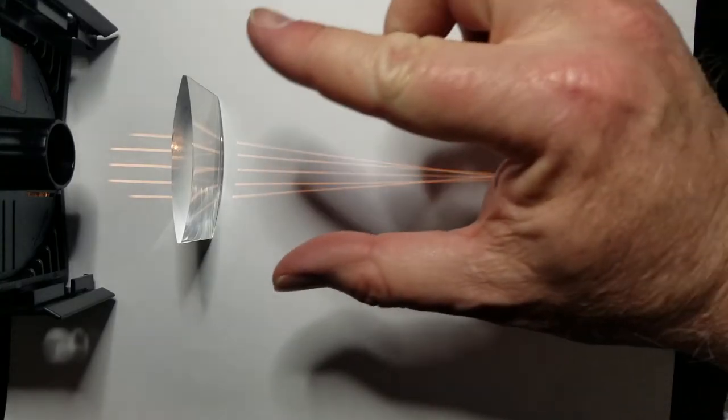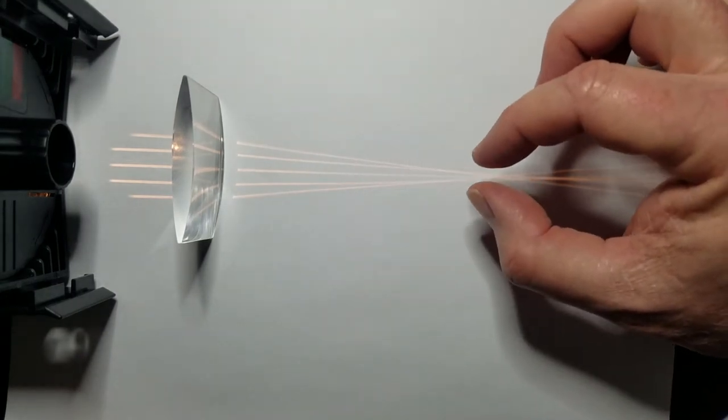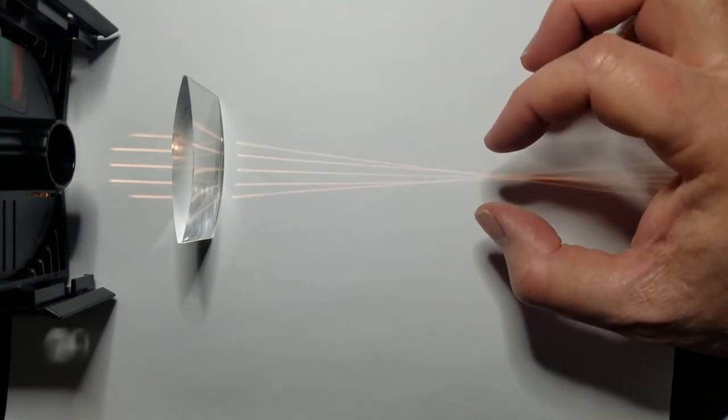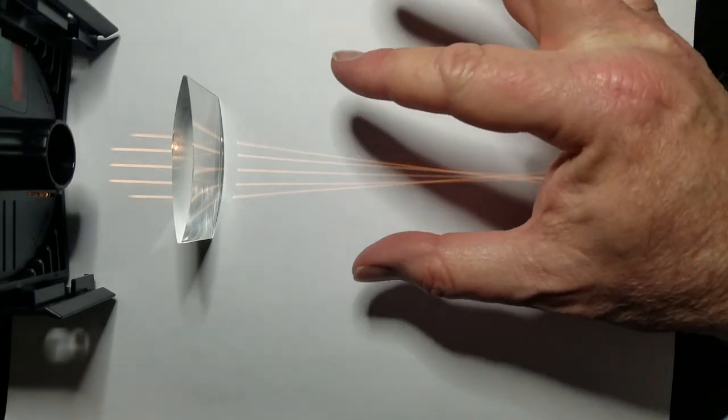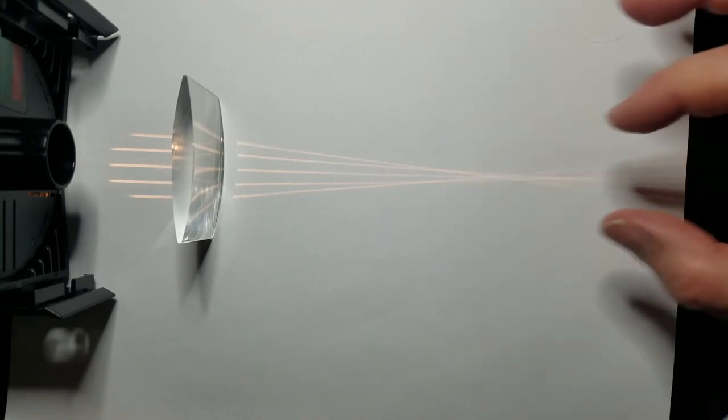So the beams focus to a focal point where all the light gets concentrated. Just like a magnifying glass, outside you can focus all the light from the sun into a point, and that point will get very, very hot.